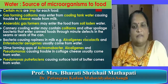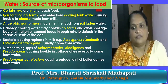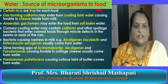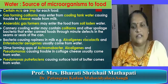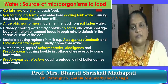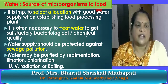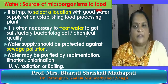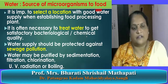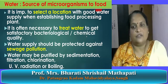Bacteria that cause ropiness in milk — for example, Alkaligenes, Viscosieptus, and Enterobacter aerogenes — usually come from water. Slime-forming species of Achromobacter, Alkaligenes, and Pseudomonas that cause trouble in cottage cheese usually come from water. Pseudomonas putrefaciens, which causes surface taint of butter, also comes from water. Therefore, it is highly important to select a location with good water supply when establishing a food processing plant. It is often necessary to treat water to get satisfactory bacteriological and chemical quality.